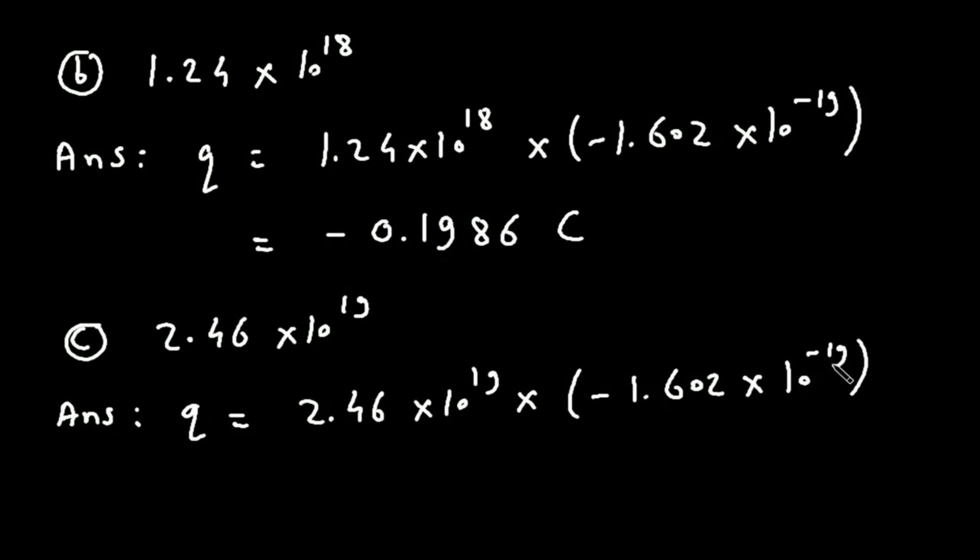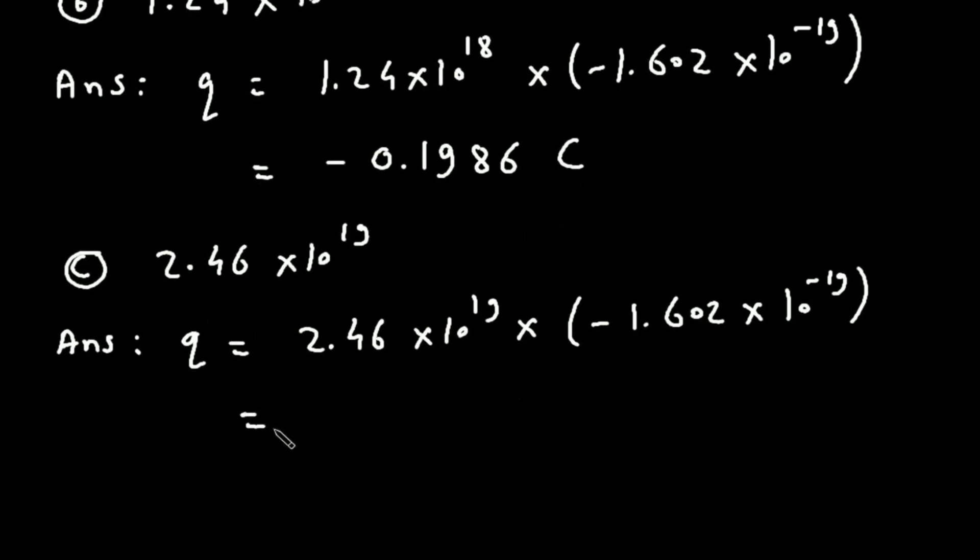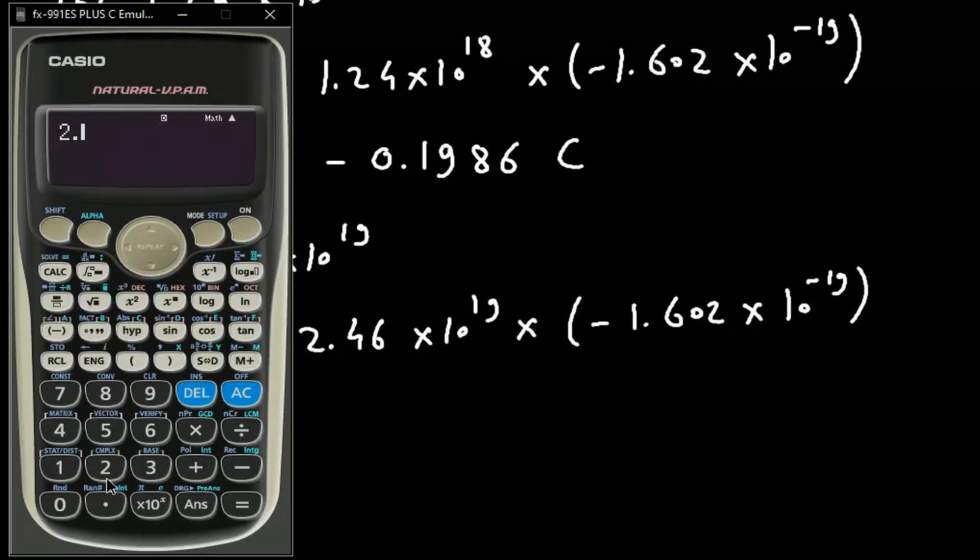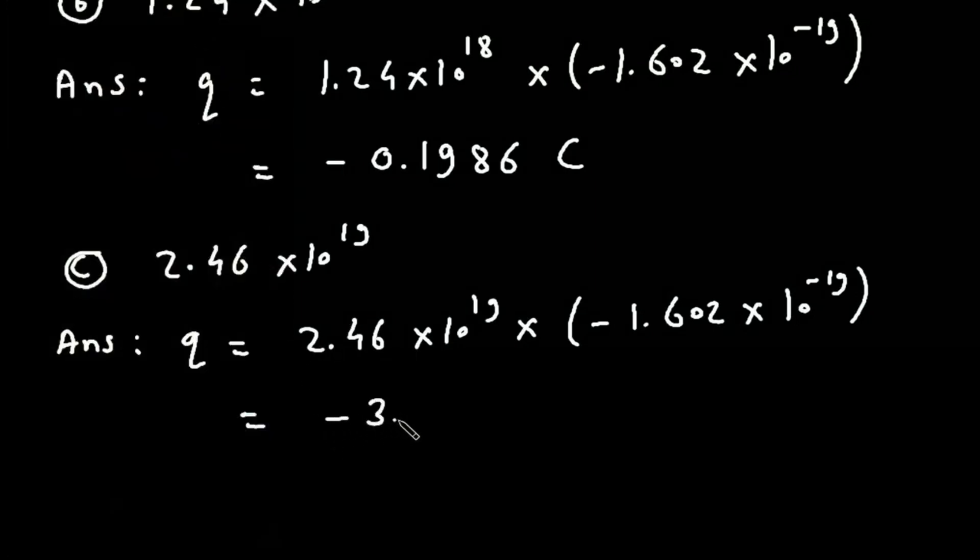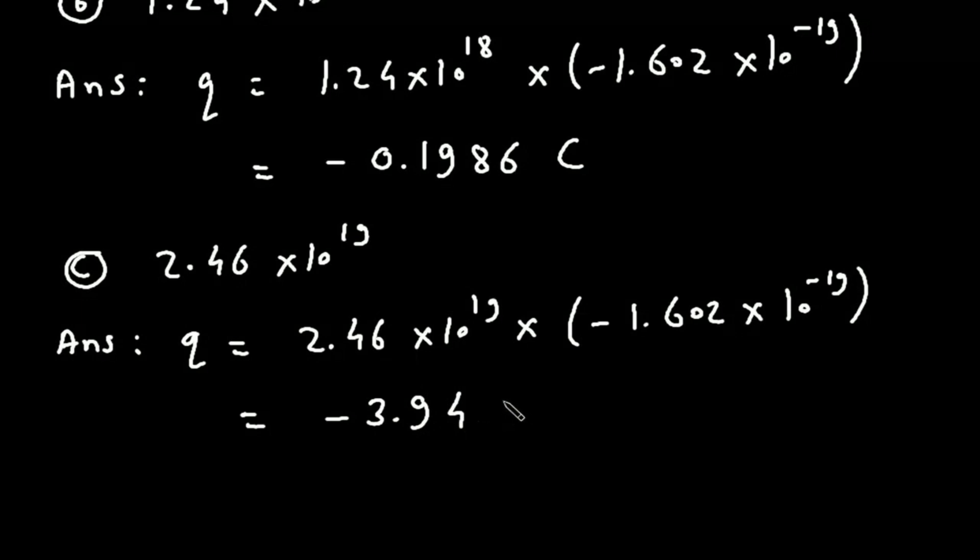This 10^-19 and this 10^19 will get cancelled. So, 2.46 times minus 1.602 equals minus 3.94 Coulombs.